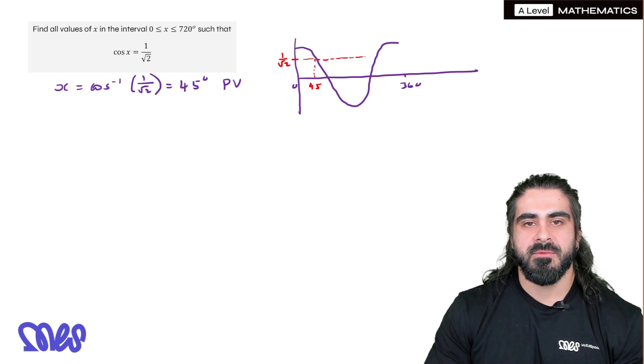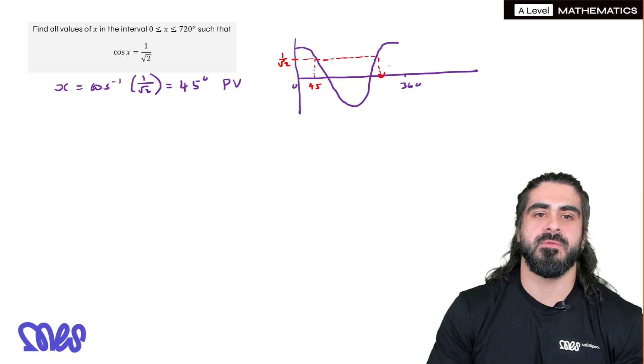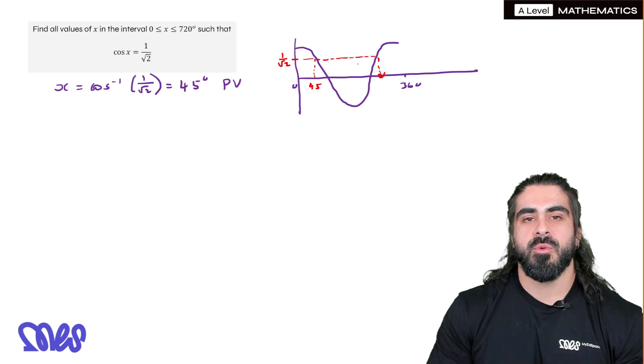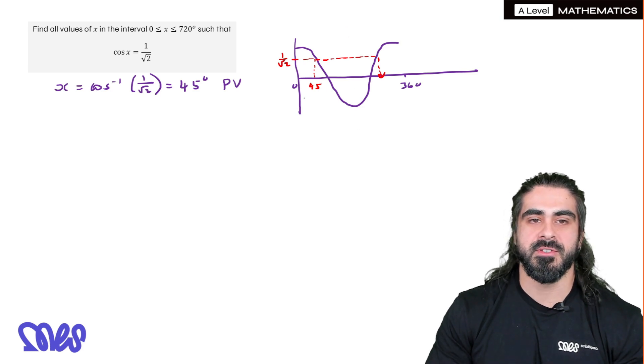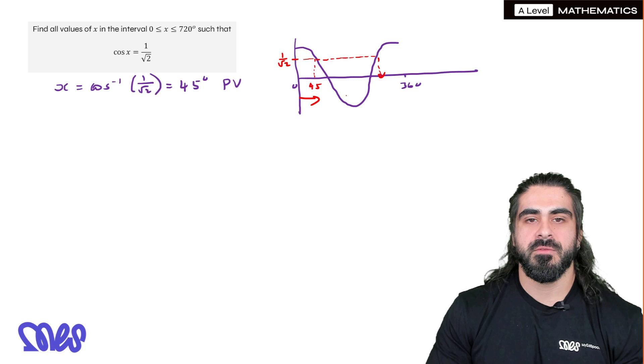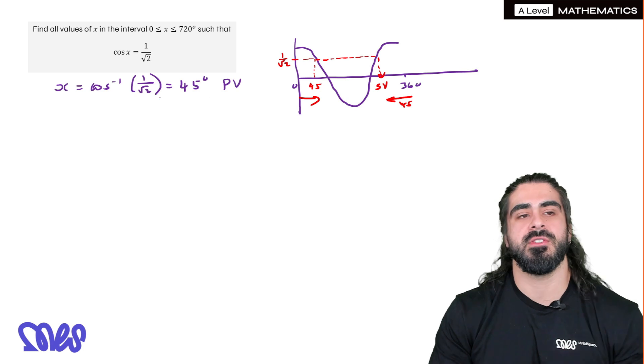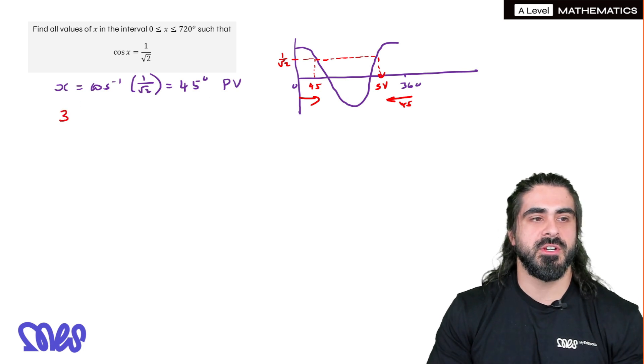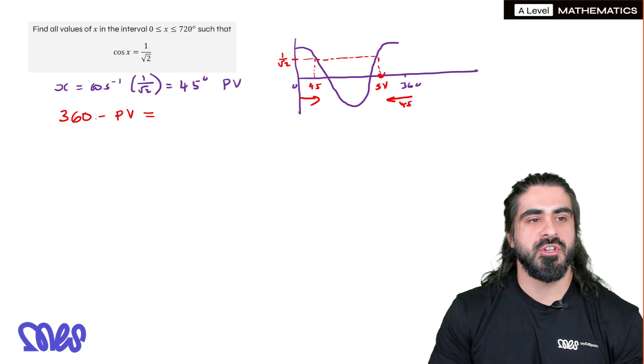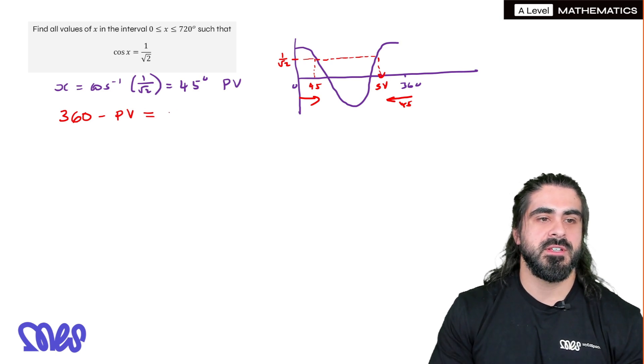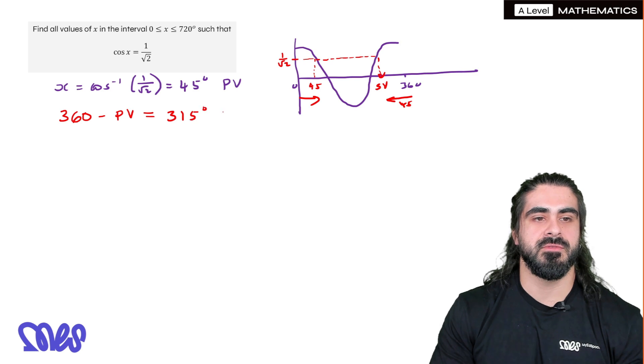But you notice again, we have another one over here. How do we find that secondary value? Well, the cosine graph is symmetrical about 180 degrees. So we're coming in 45 here, which means using symmetry about 180, we have to go back 45 degrees from 360 to find our secondary value. And it's always the case. To find our secondary, we're going to do 360 minus the primary value. So 360 minus 45 degrees gives us 315 degrees.